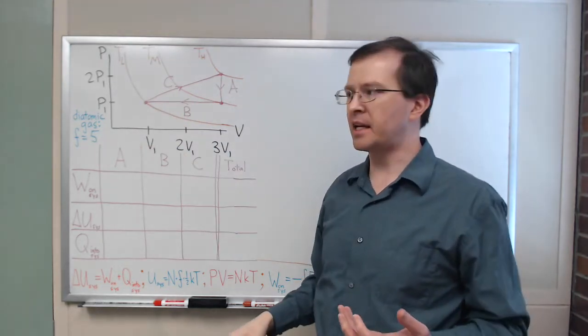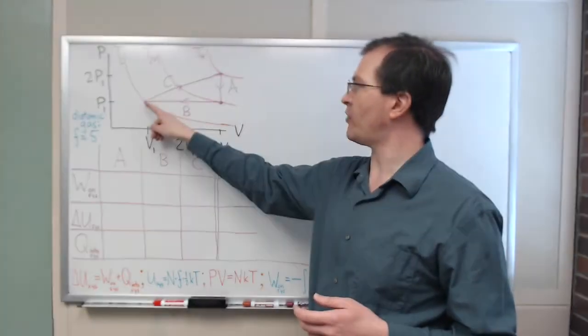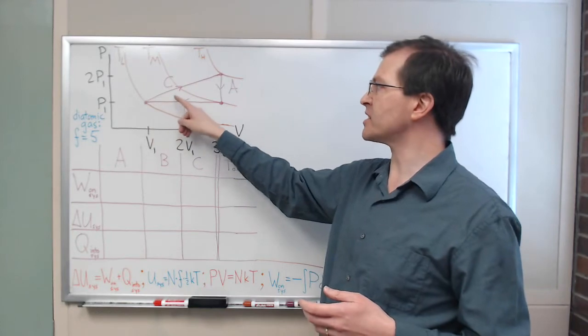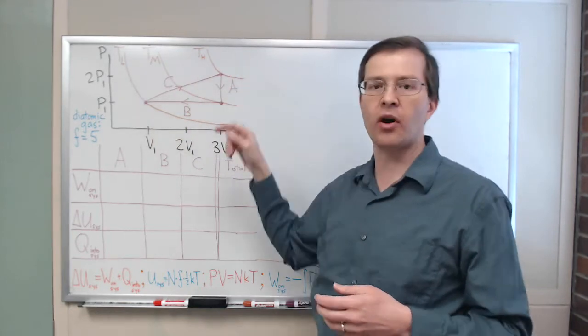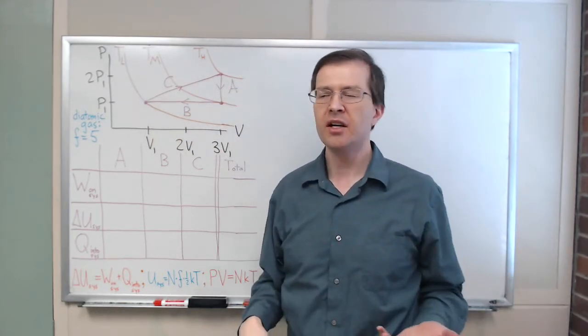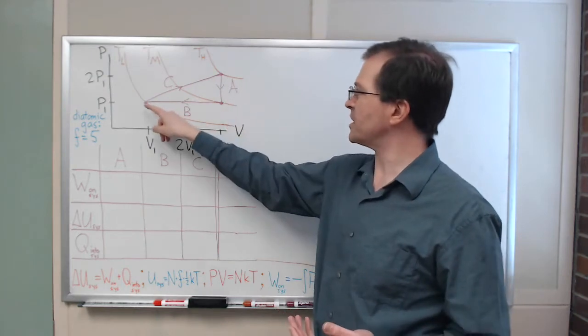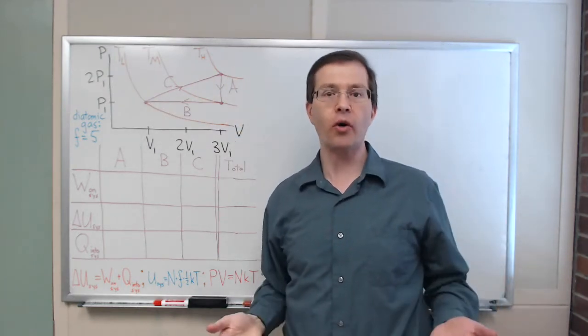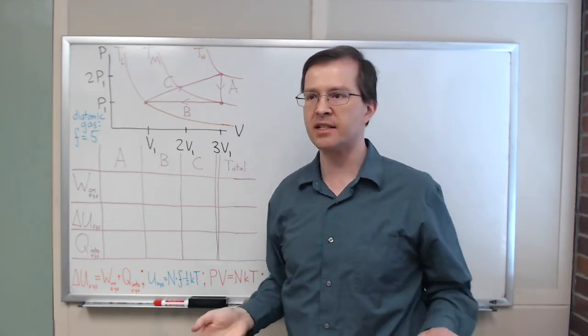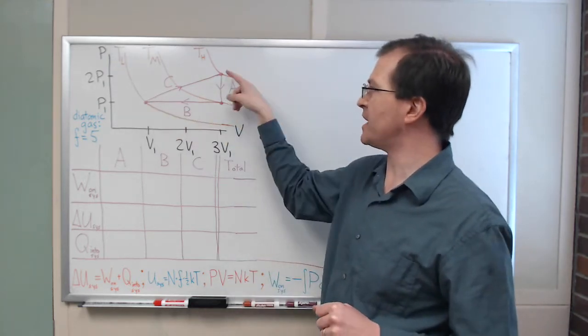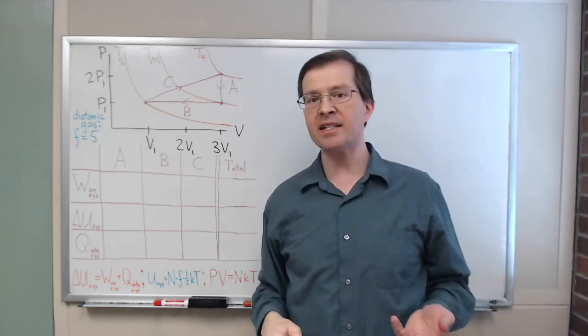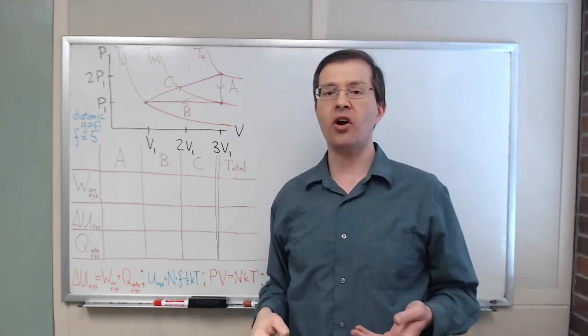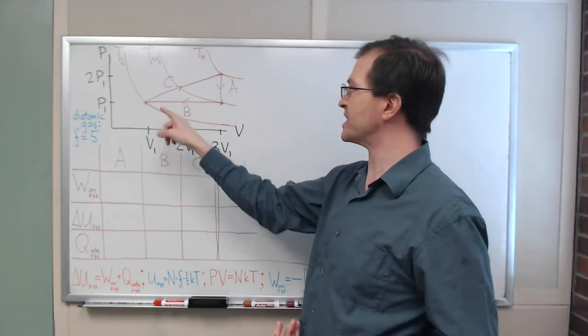And finally, in step C, we're going to increase the pressure and the volume at constant rates to take us straight back to our initial state of the system. So, the diagram here with these different arrows, these different lines on this diagram, it shows the story of what happens to the system in this process. Now, the fact that this combined process A, B, and C together starts and ends at the same point is technically called a cyclic process because it goes in cycles.